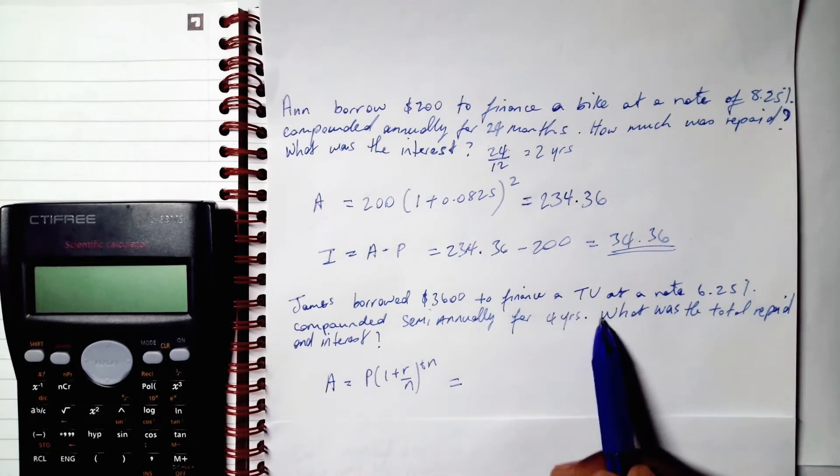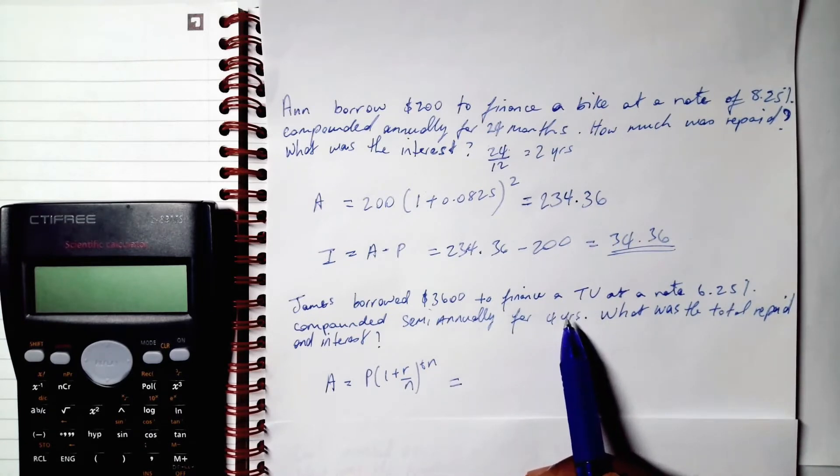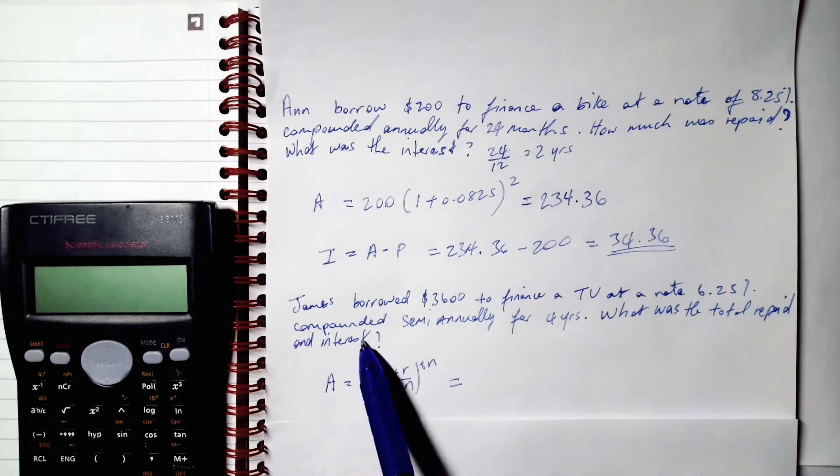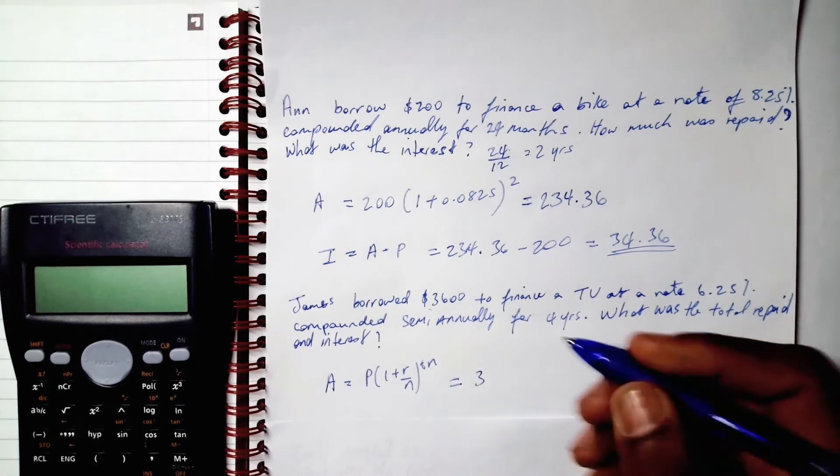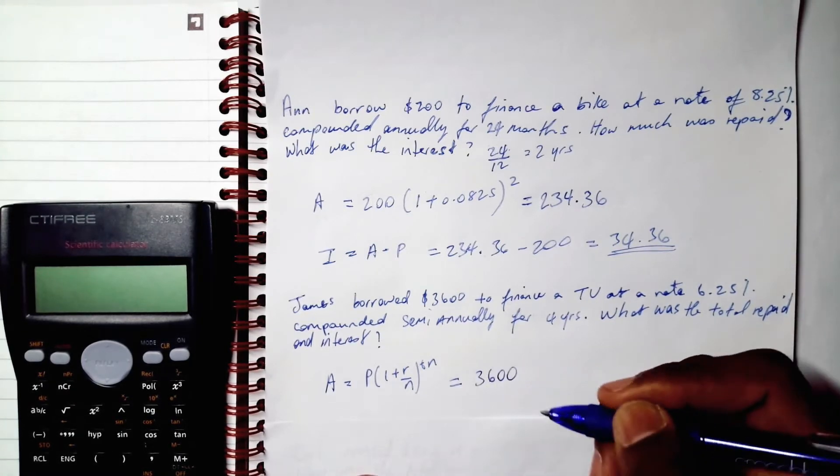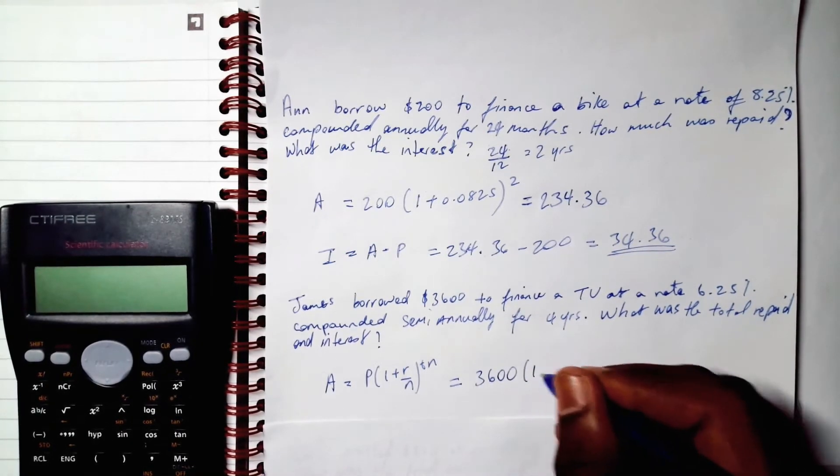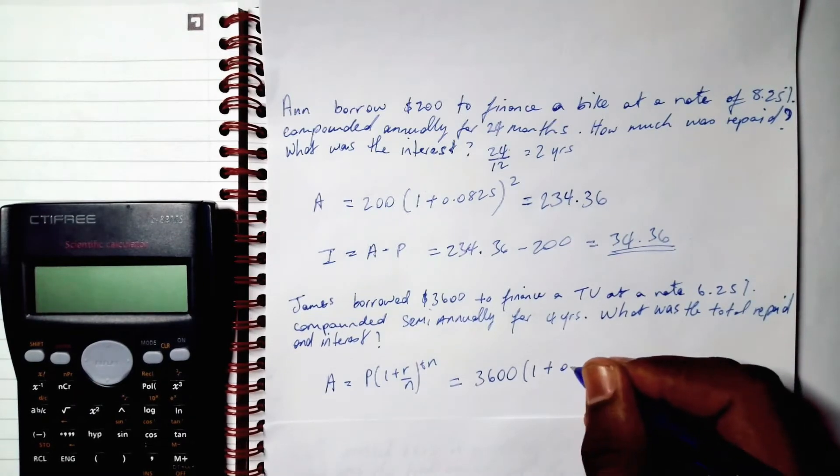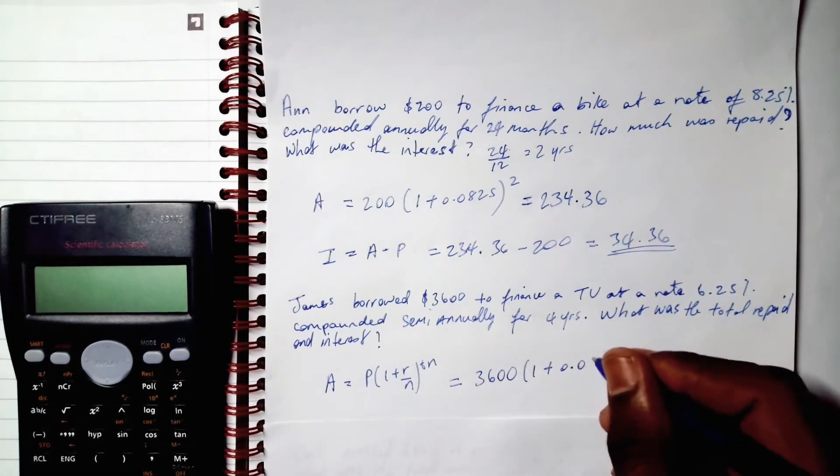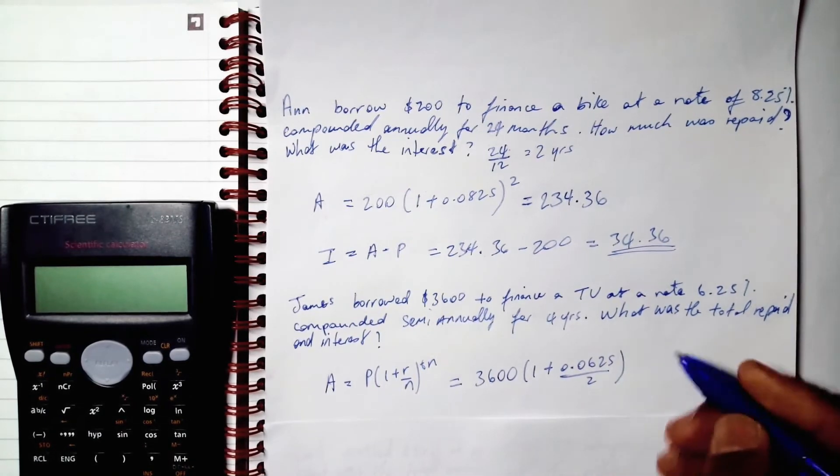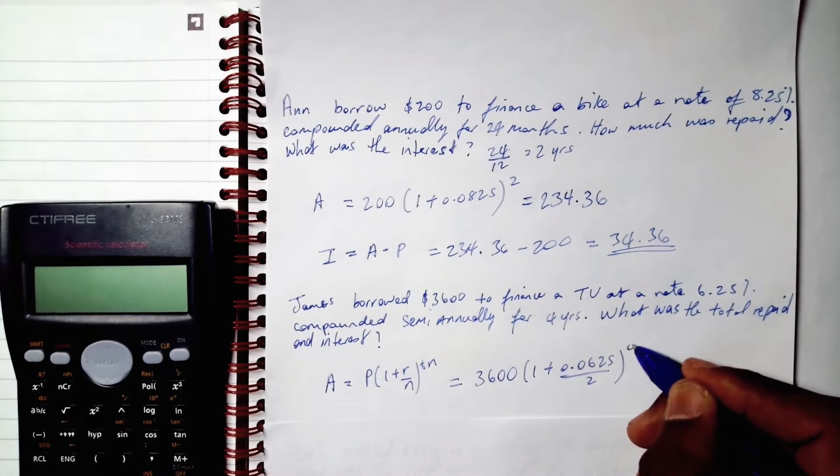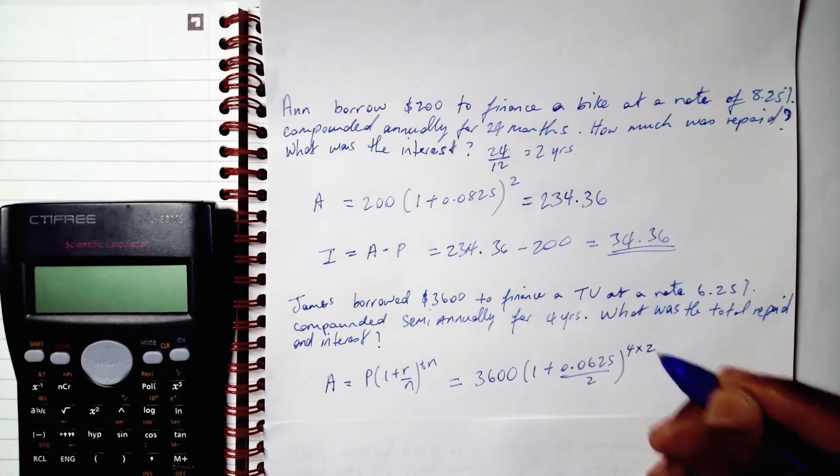All right, good. So we know what our principle is, our interest rate is, and our time period is, and we also know what n is because it's compounded semi-annually. So now let's plug these in: 1 plus 0.0625 divided by 2 raised to the power of 4 times 2.